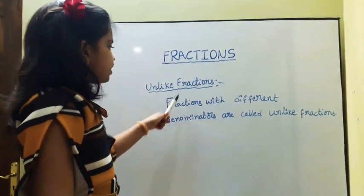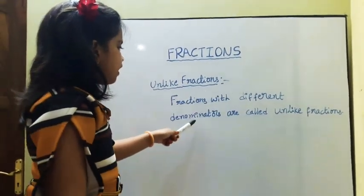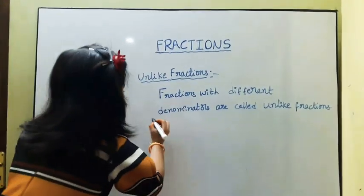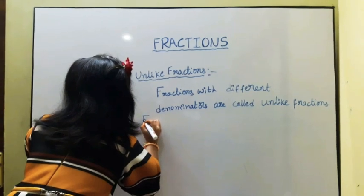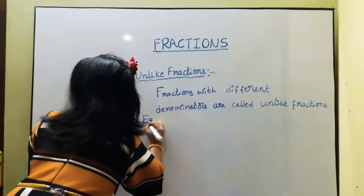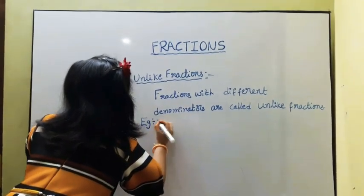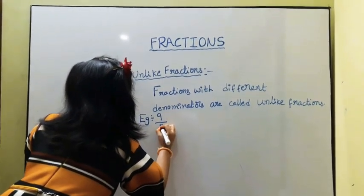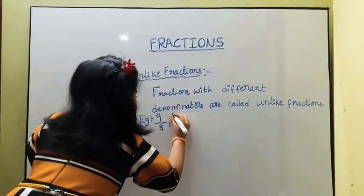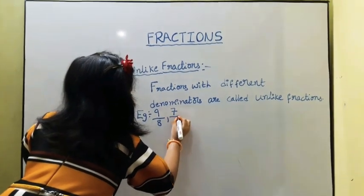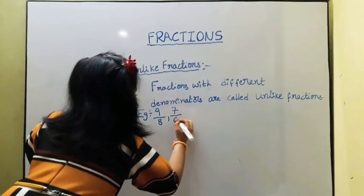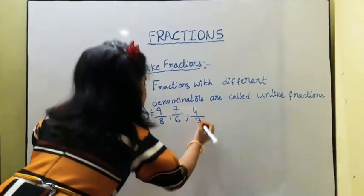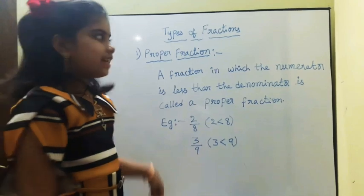Next, unlike fractions. Fractions with different denominators are called unlike fractions. For example: 9 upon 8, 7 upon 6, 4 upon 3, etc.